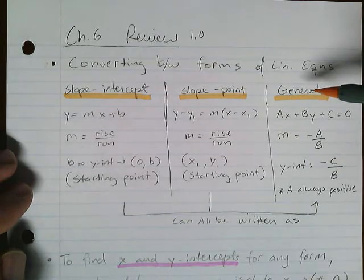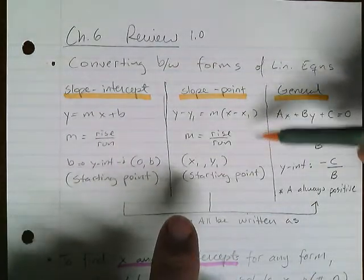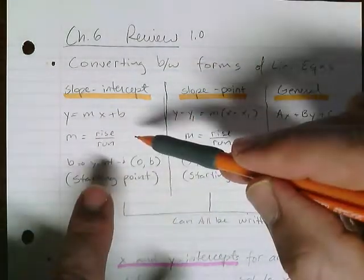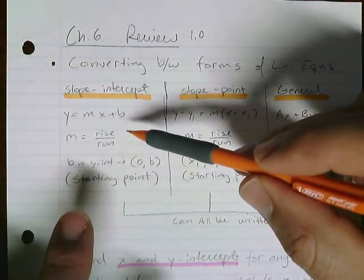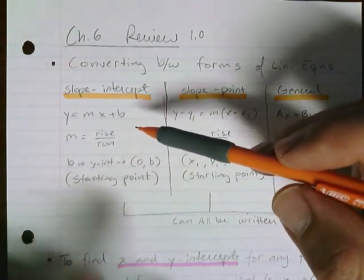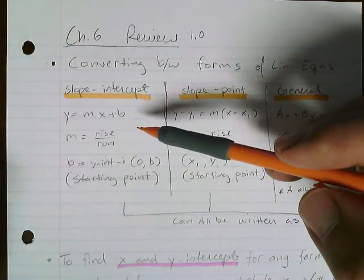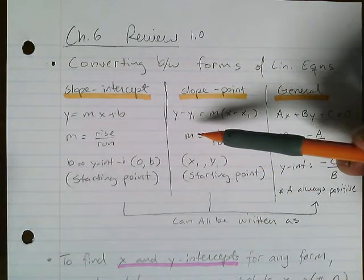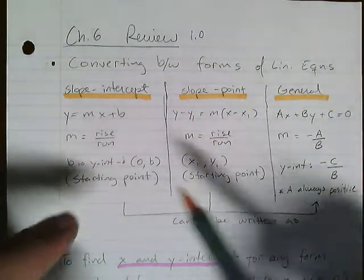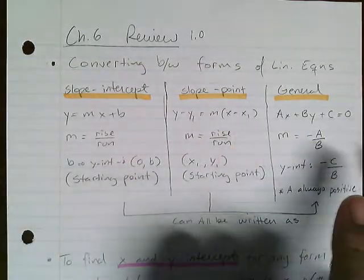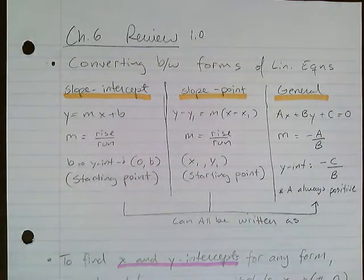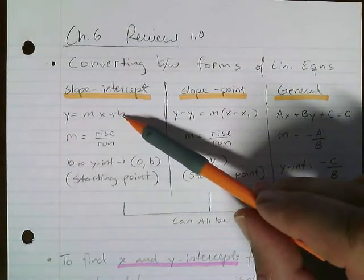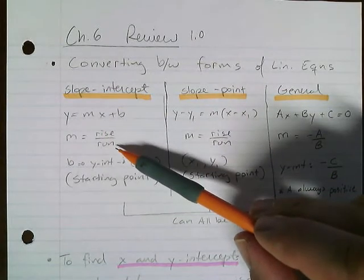In retrospect, I should have probably had this on the left. Slope-point works every time as long as you have the slope and a point. Then you go to slope-intercept, then you go to general. But the fact is that both of these can always be written as general.